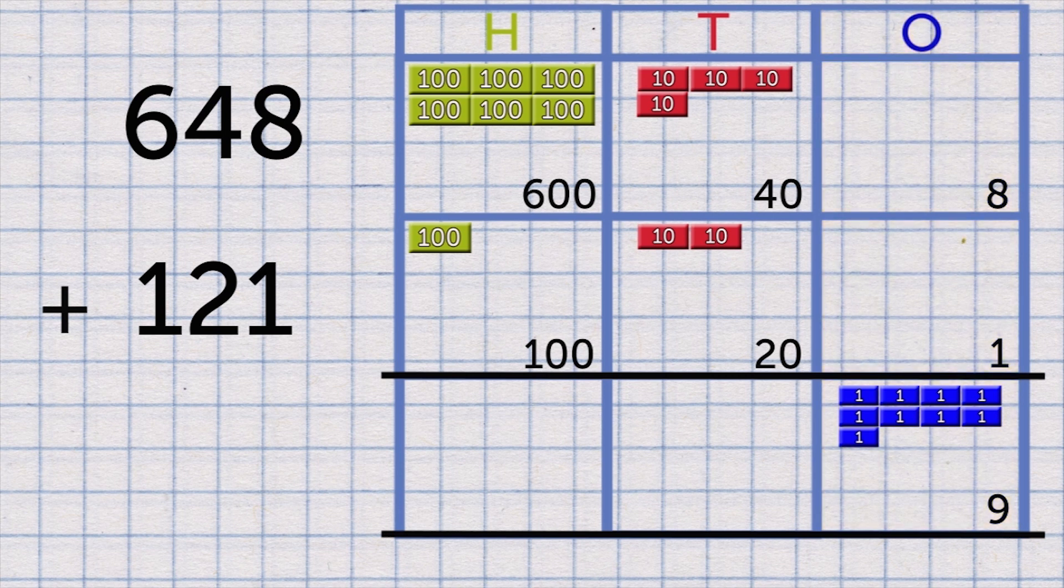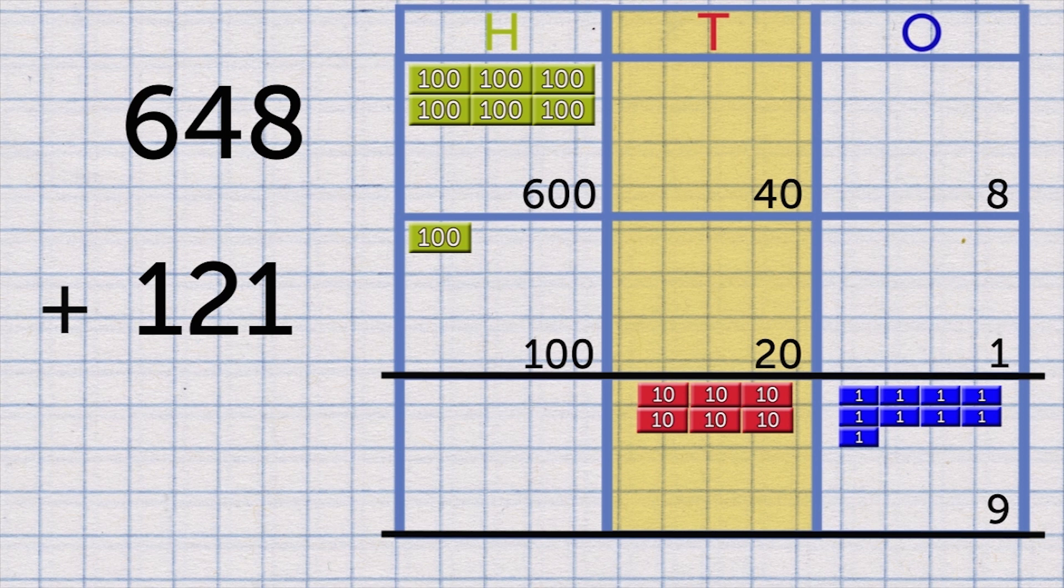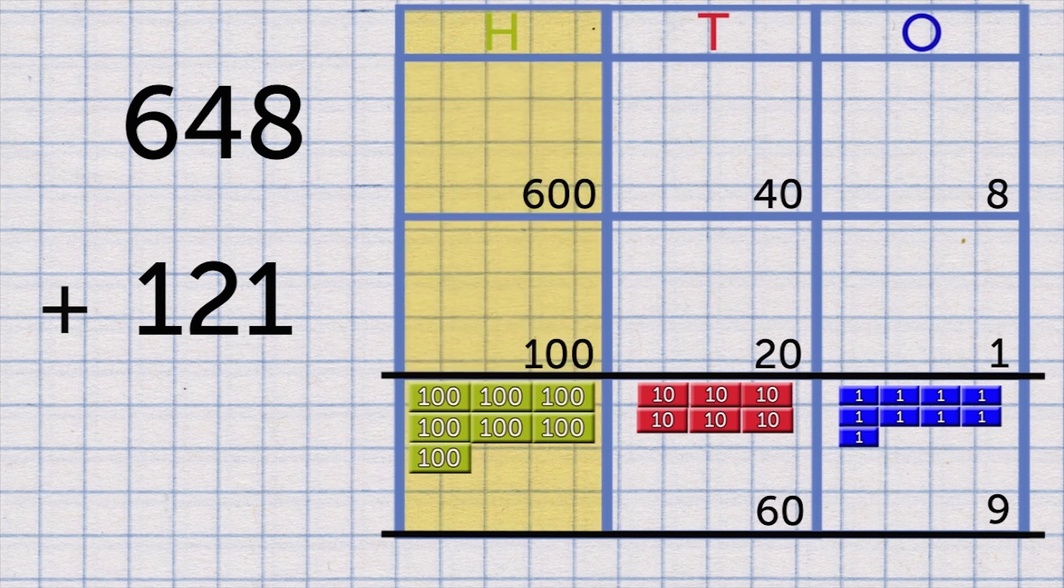Next, the tens: 4 tens and 2 tens are 6 tens, or 60. Then the hundreds: 6 hundreds and 1 hundred...